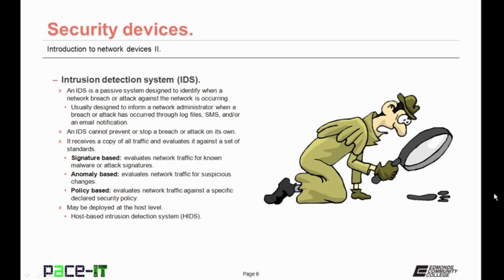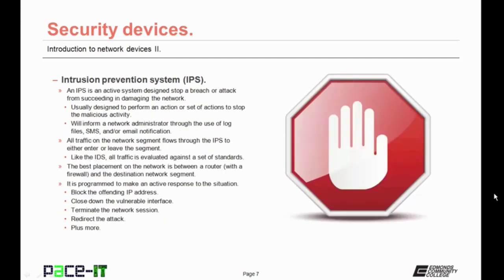Or the standard may be policy-based — evaluating network traffic against a specific declared security policy. An IDS may be deployed at the host level, in which case it's called a Host-based Intrusion Detection System, or HIDS. More potent than the IDS is the Intrusion Prevention System — the IPS. An IPS is an active system designed to stop a breach or attack from succeeding in damaging the network.